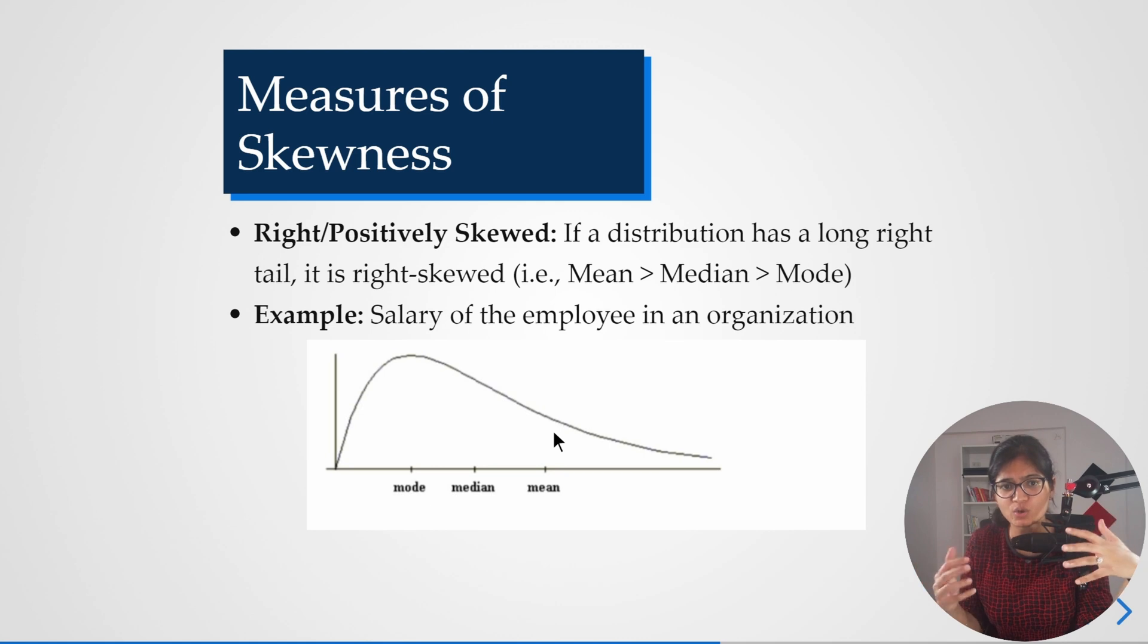Can you tell me the reason why? What's the example where you can correlate this kind of distribution?